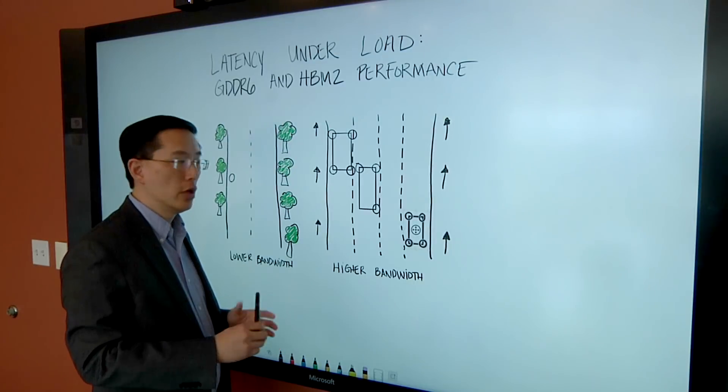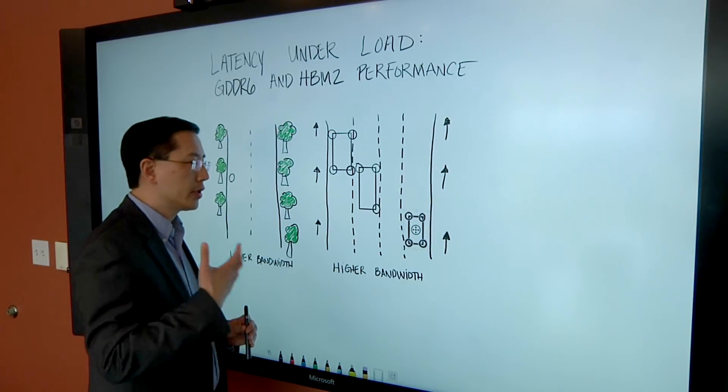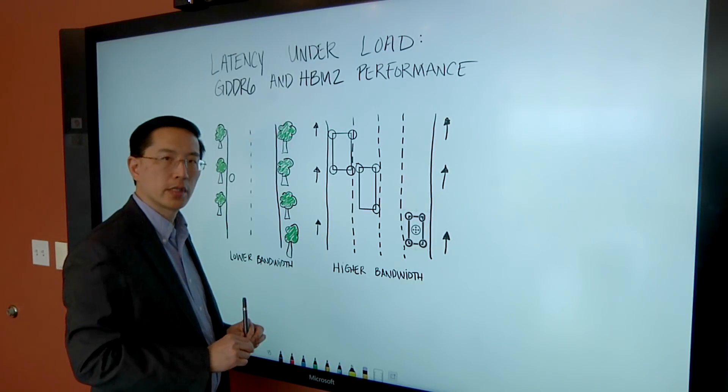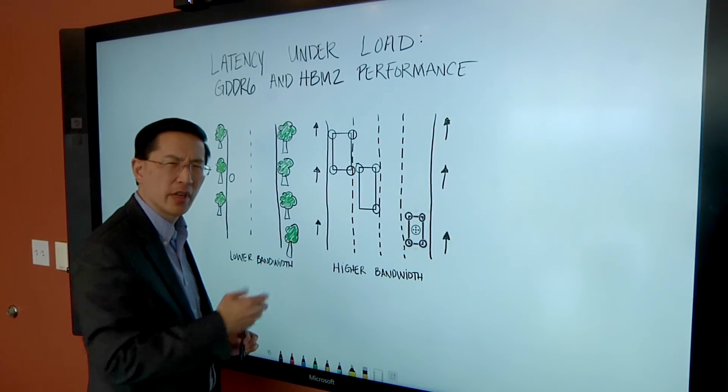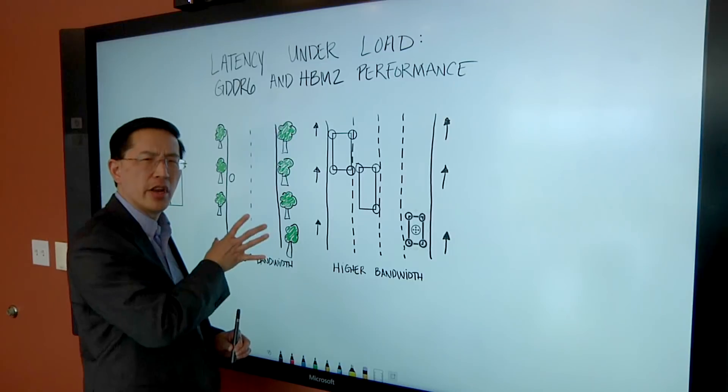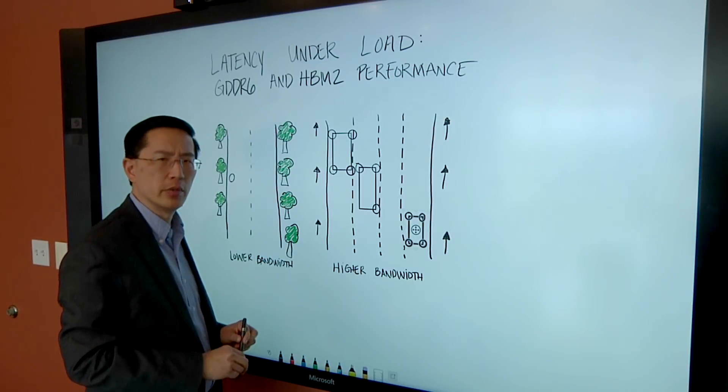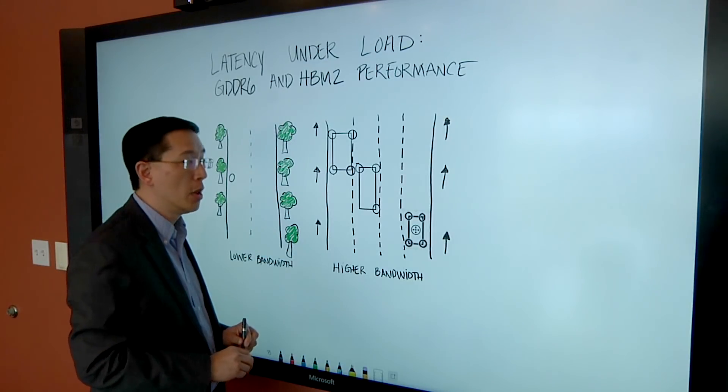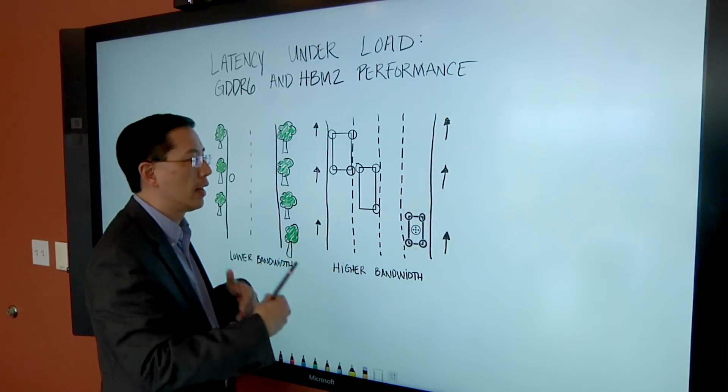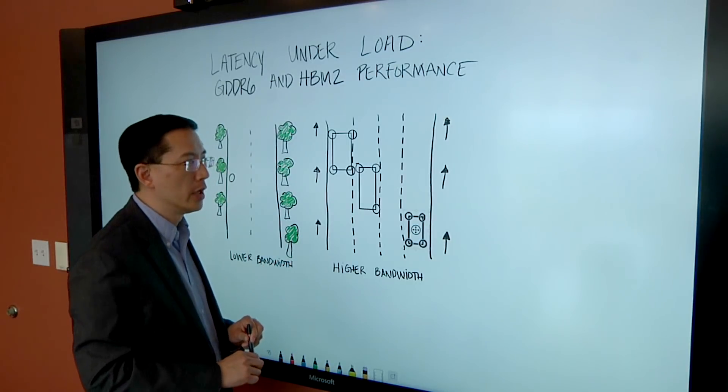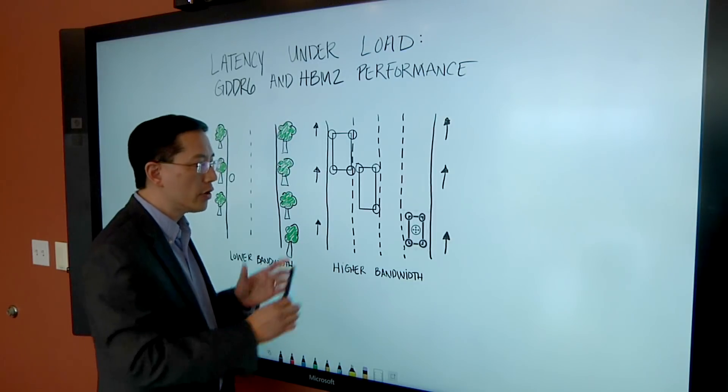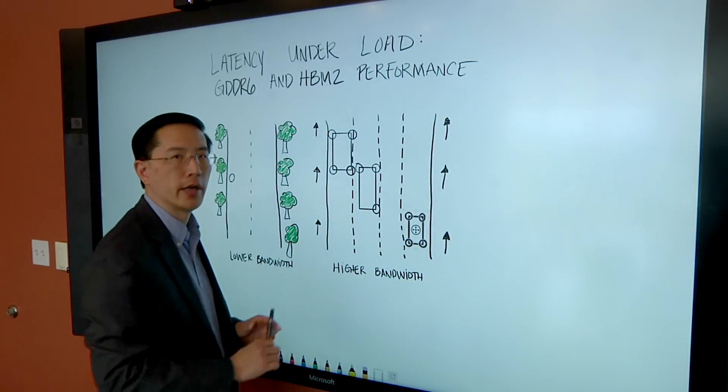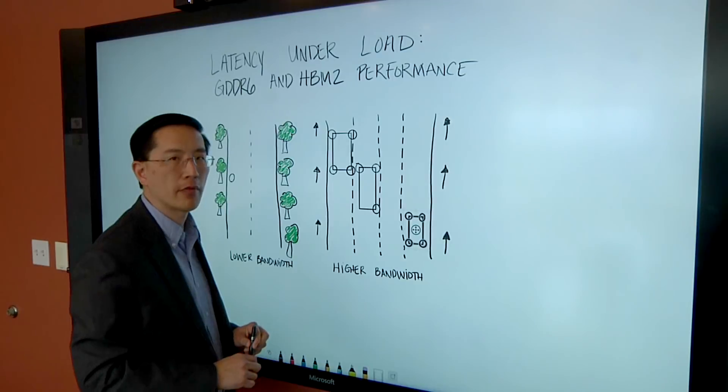So if you have a workload where you absolutely positively need the lowest latency and you're not really using, there's not much traffic on the system, you can build a narrower system, something like what you would see with DDR or LPDDR. But if you have a system where you have lots of requests into the memory system, something like graphics or artificial intelligence, you want something with a much wider highway to support lots of traffic.